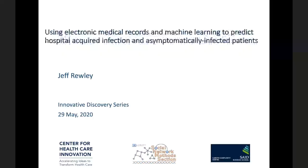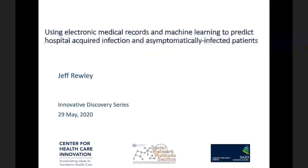Asymptomatic infections are particularly becoming more relevant in this time of COVID. To give a brief outline, I'll start with some background on healthcare-acquired infections and some basic contact tracing. Then I'll go into depth on two studies: the first predicting hospital-acquired infection using electronic medical records and hospital administrative data, and the second trying to identify asymptomatic infections and their effects on infectious disease outbreak spread using machine learning within healthcare systems. I'll end with conclusions and Q&A.